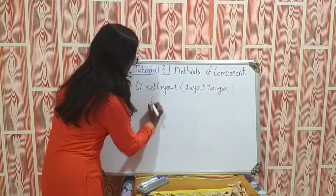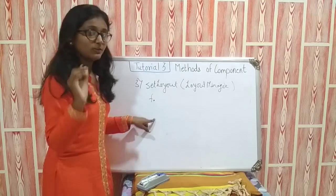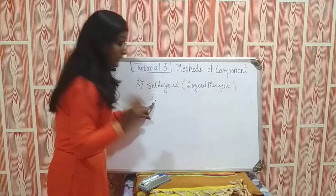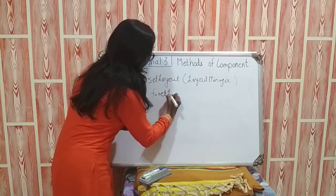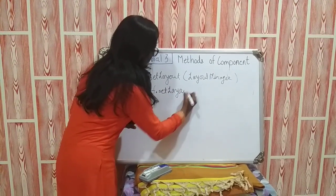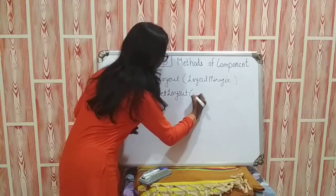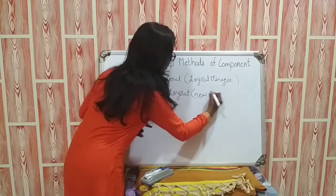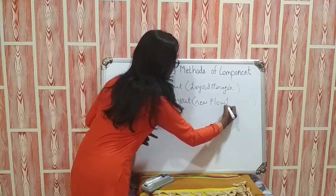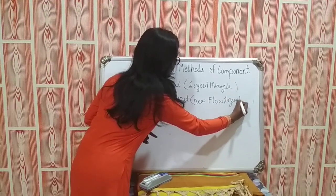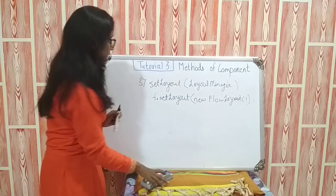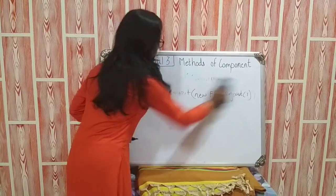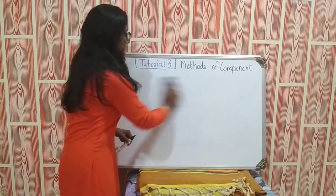How we will use this? Suppose here is a frame F, which is the object of a frame class. I will set its layout by this method. It is setLayout, and I will make the object of flow layout which is the layout manager. In this way I will use this setLayout method.